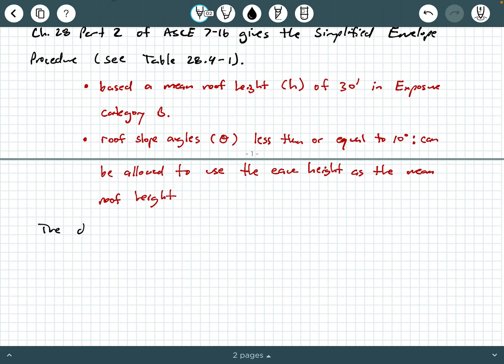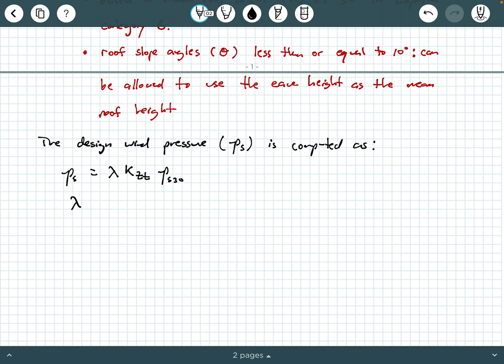According to this simplified envelope procedure, the design wind pressure, which we call P sub S, is computed as P sub S equals lambda times K sub ZT times P sub S30.